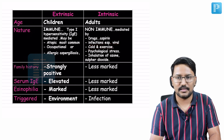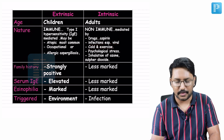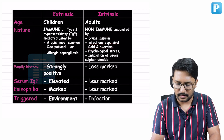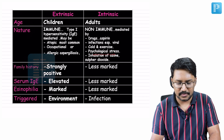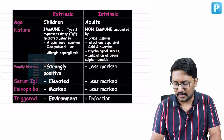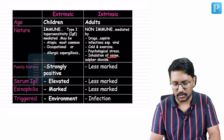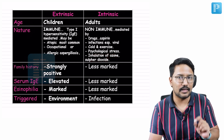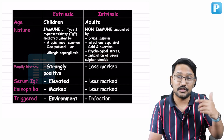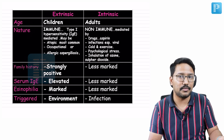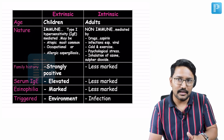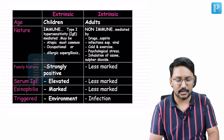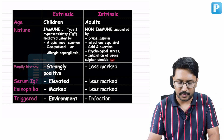Other precipitating factors in intrinsic asthma include infections like viral infections, the common cold, and exercise. Chemical irritants like ozone or sulfur dioxide can also precipitate asthma episodes — not by stimulating IgE production, but acting as direct irritants.